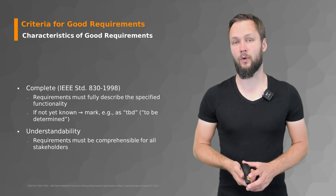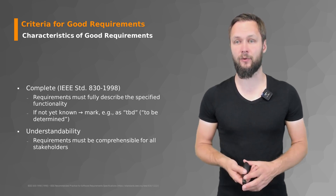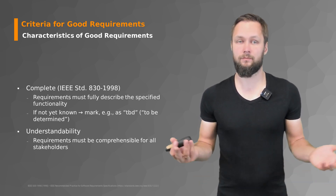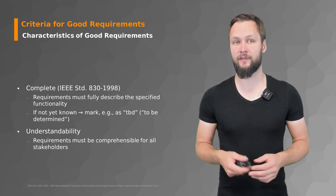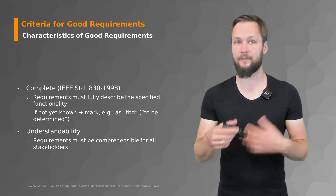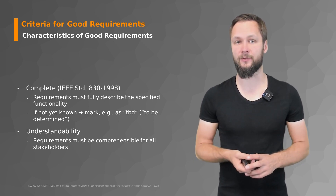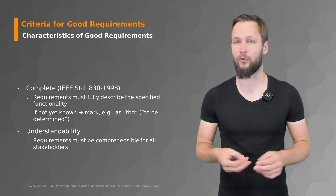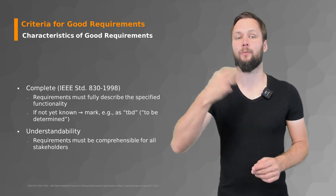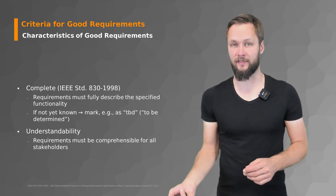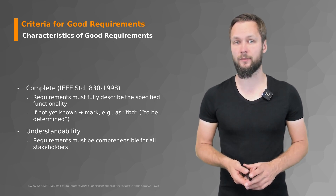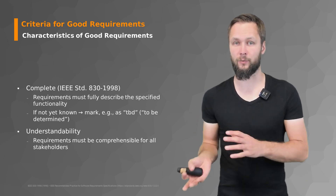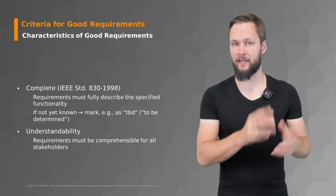Completeness also seems very obvious, but requirements should be fully described and specified from the functionality perspective. If something is not yet known, add some kind of annotation or mark it as 'to be determined,' so that you know you have to get back to it before you can start implementing. And then understandability: requirements must be comprehensible for all stakeholders. This ties back in with the challenges of communication covered in a previous lecture.